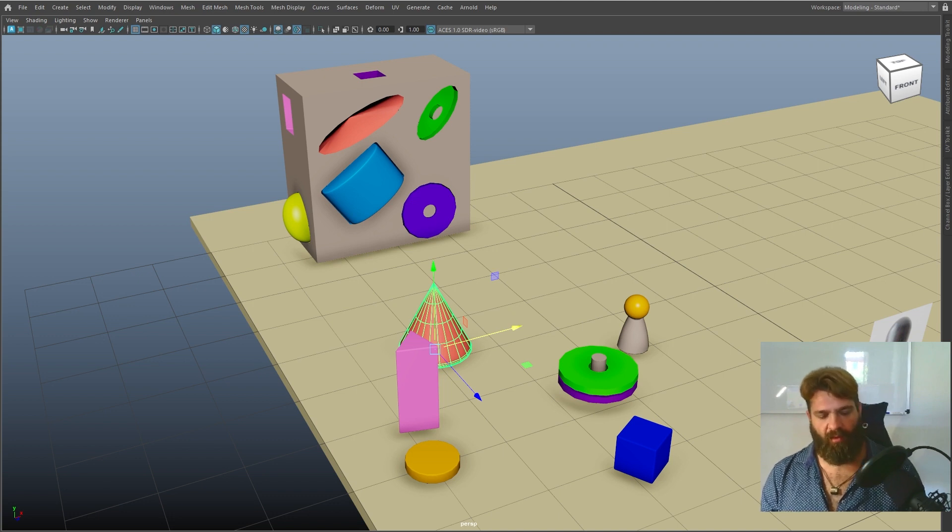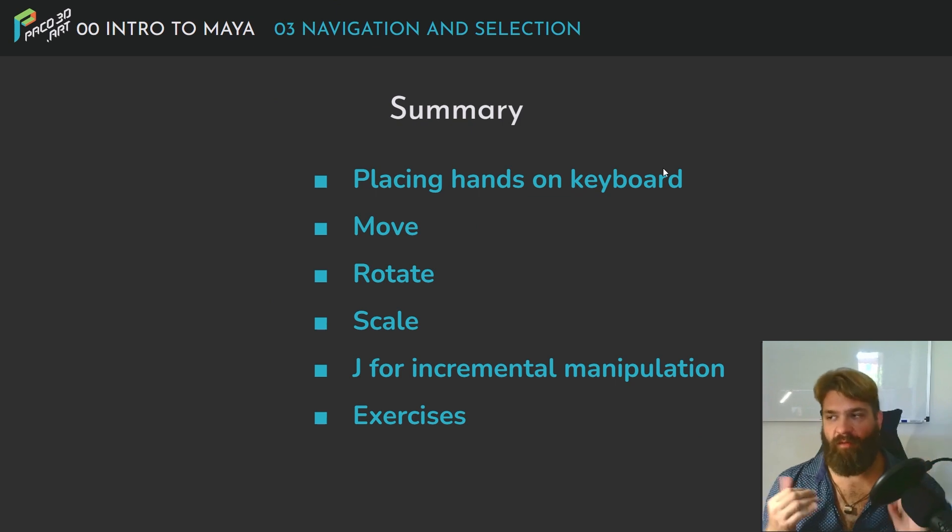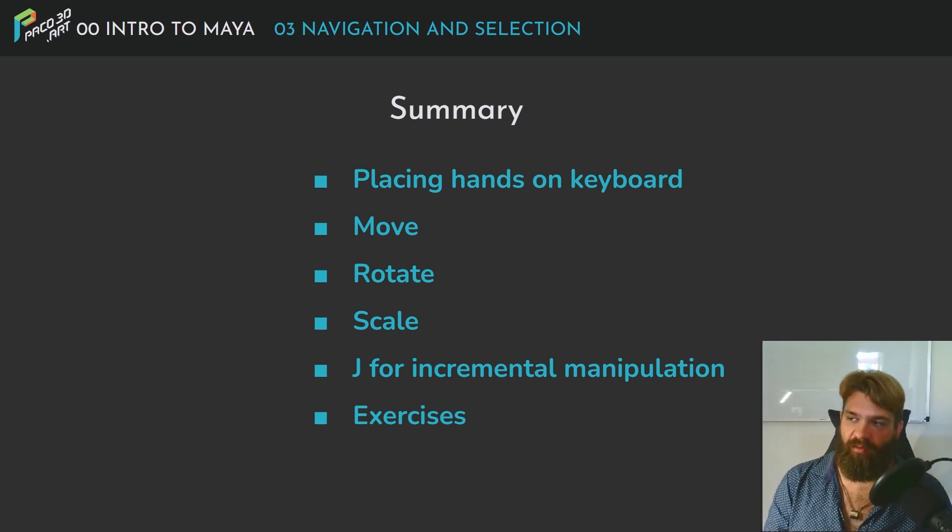To summarize: we've covered how to place your hands on the keyboard, how to do movement, rotation, and scale, and J for incremental manipulation, plus this first exercise. In the next lesson, we're going to cover different ways to create primitives in Maya — a cube, cylinder, sphere, and so on — as well as how to change some of their parameters and colors so we can start doing some block-out work. That's usually the beginning of any 3D modeling.